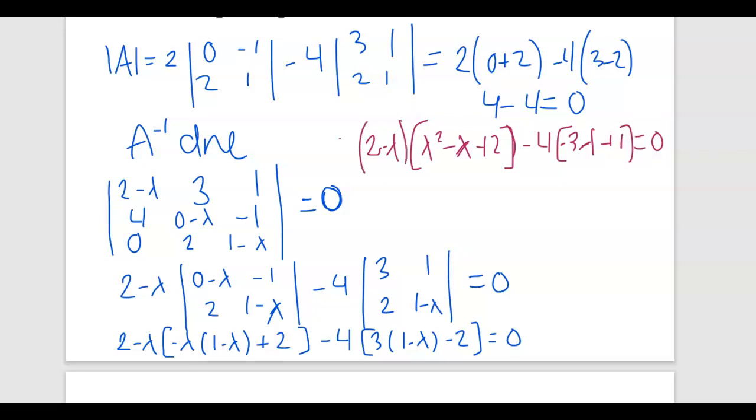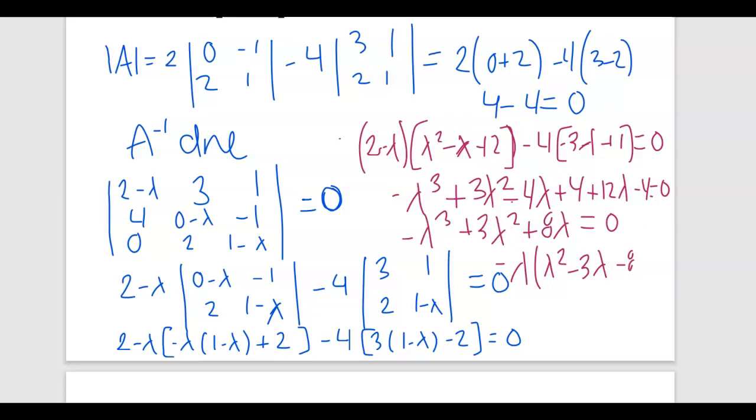All right, when I distribute this inside of that whole big piece, I'm going to end up getting, I keep having a hard time making that lambda not look like an x, lambda cubed plus 3 lambda squared minus 4 lambda plus 4. And then we'll have plus 12 lambda minus 4. And what does that give us? Negative lambda cubed plus 3 lambda squared plus 8 lambda equals 0. So now I'm going to factor out a lambda. I'm actually going to factor out a negative lambda.